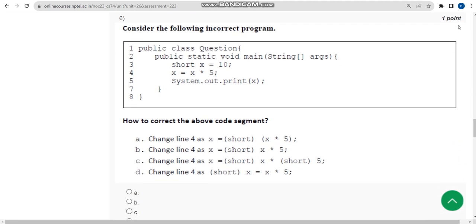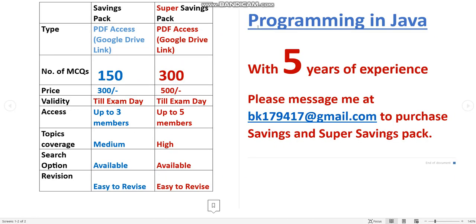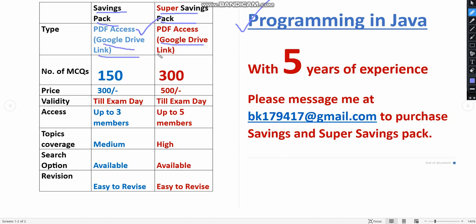Before getting into the sixth question, I want to make a small announcement regarding NPTEL exam preparation MCQs for the Programming in Java course. We have prepared two types of packs: a Savings Pack and a Super Savings Pack. In the Savings Pack there are 150 MCQs for a total cost of 300 rupees. In the Super Savings Pack there are 300 MCQs for only 500 rupees.